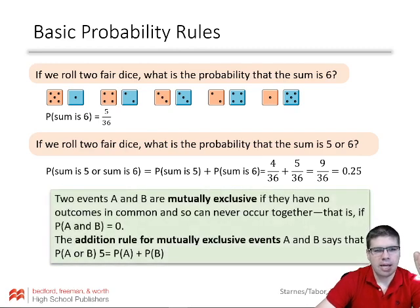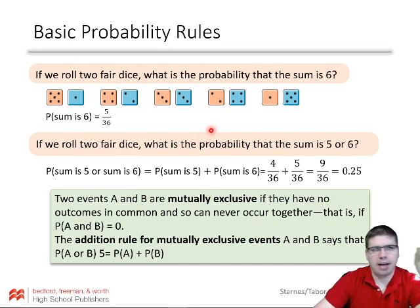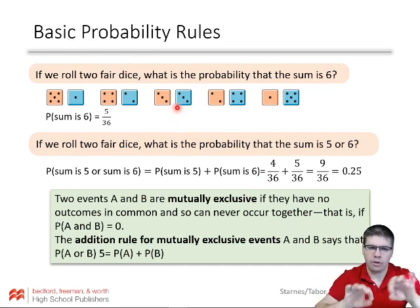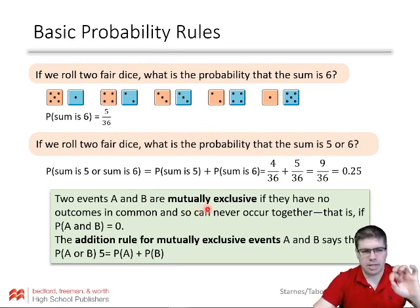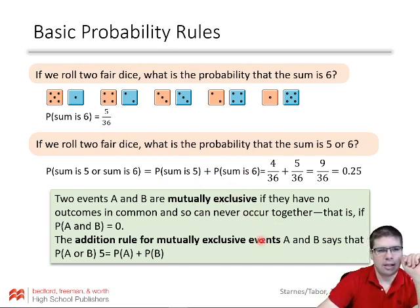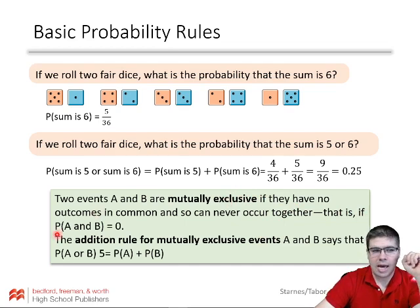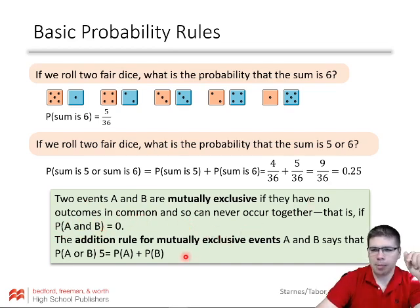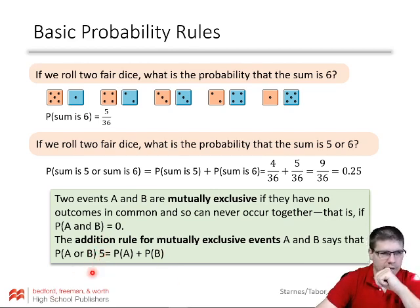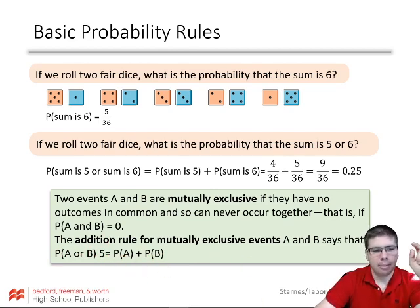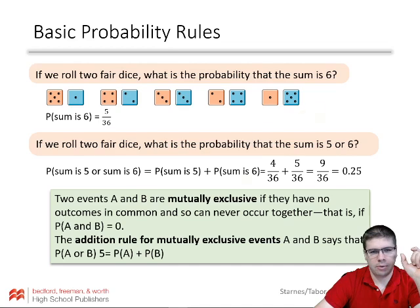We can add those probabilities together because these two events are mutually exclusive — they never happen at the same time. You can't have the sum be both five and six. Another term you'll see is 'disjoint' — it means the same thing. For mutually exclusive or disjoint events that have no outcomes in common, the addition rule says P(A or B) equals P(A) plus P(B). But be cautious: this only works if the events are mutually exclusive.